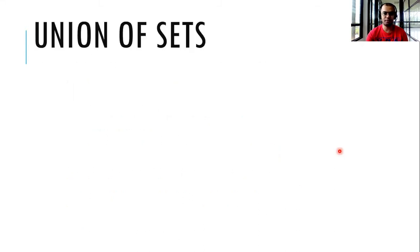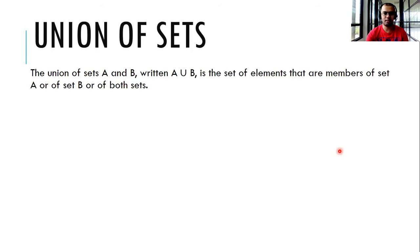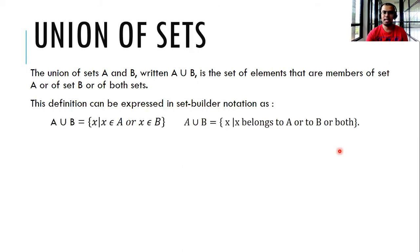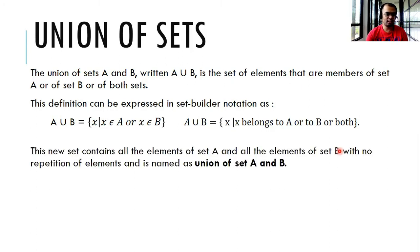Number one, union of sets. The union of sets A and B, written as A union B, is the set of elements that are members of set A, or of set B, or of both sets. This can be expressed in set-builder notation as: A union B is the set of all x such that x is an element of A or x is an element of B, or both. This new set contains all the elements of set A and all elements of set B with no repetition of elements, and is named the union of set A and B.